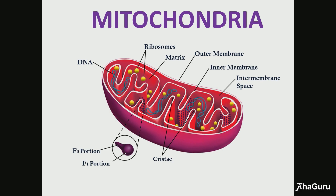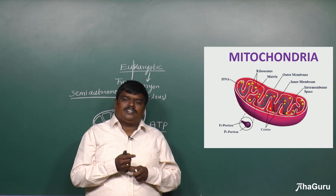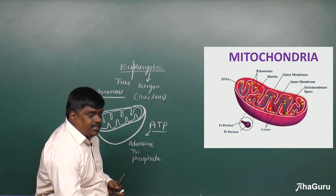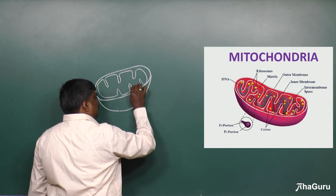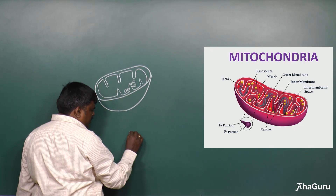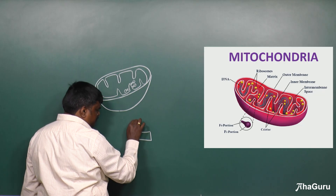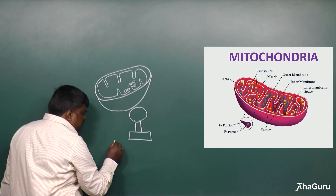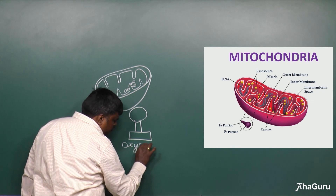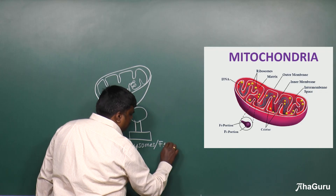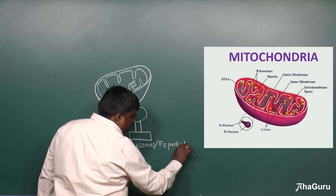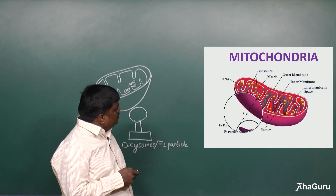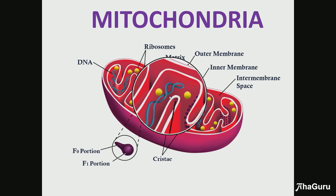Inside the matrix, in the inner membrane, there are structures called oxysomes. These oxysomes are F1 particles. This is the region where exactly the ATP molecules are synthesized.